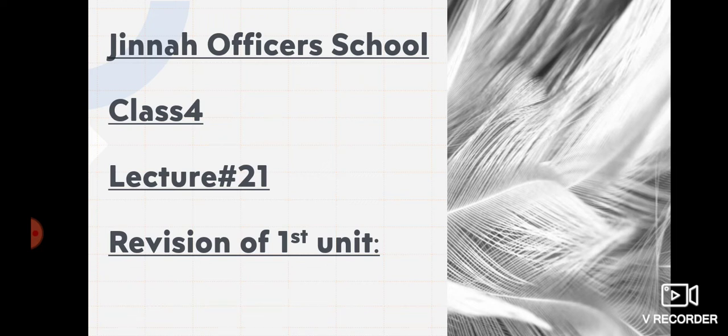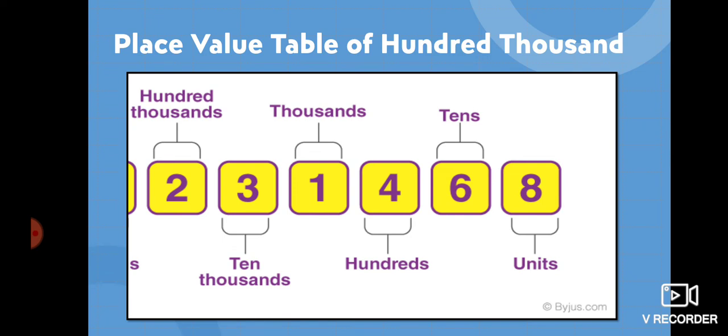So let's start our work. Here we have the concept of hundred thousand. As you all know, here we have ones or units, then tens, after that hundreds, then thousands, then ten thousand, and finally hundred thousand. Hundred thousand is a six-digit number. You can also count it like one, two, three, four, five, six. So whenever someone asks you, you will say hundred thousand is a six-digit number, ten thousand is a five-digit number, thousand is a four-digit number, hundred is a three-digit number, and vice versa.